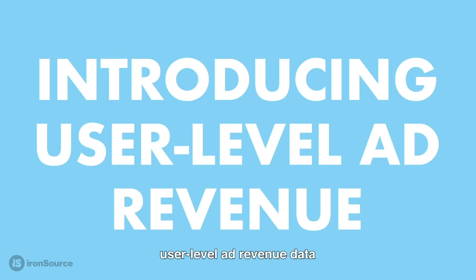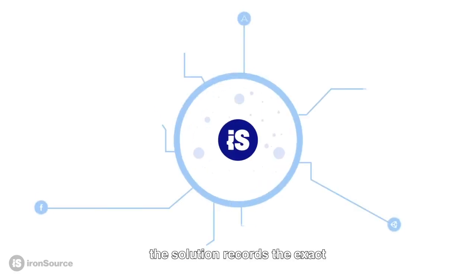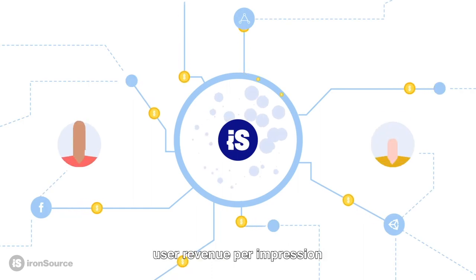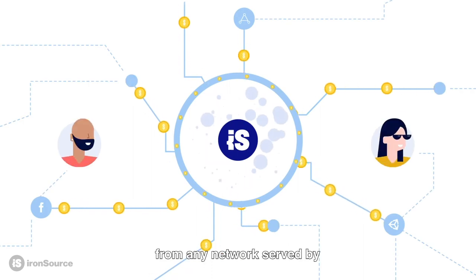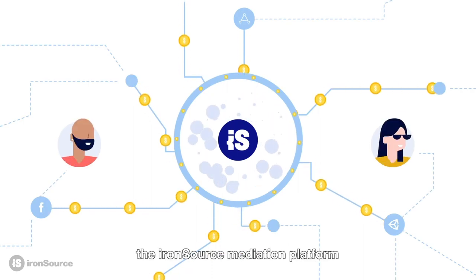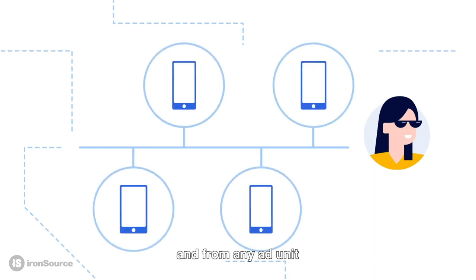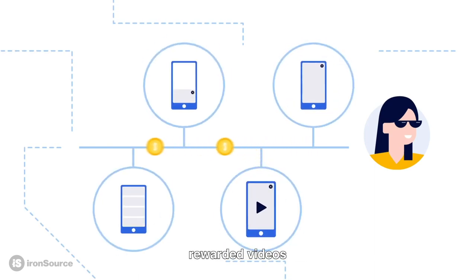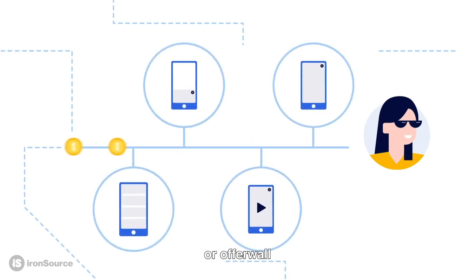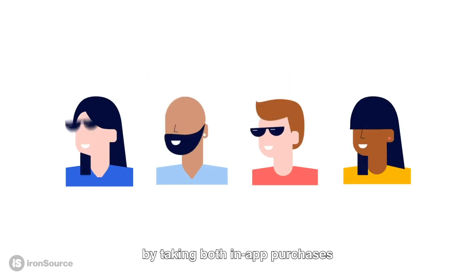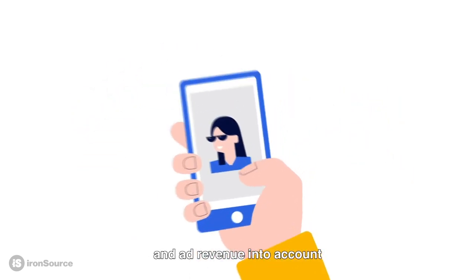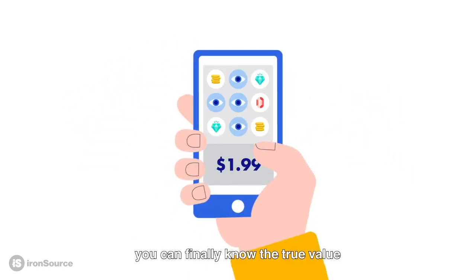That's why here at IronSource we solved this problem. User-level ad revenue data is now available on our mediation platform. The solution records the exact user revenue per impression from any network served by the IronSource mediation platform and from any ad unit — whether it's interstitials, rewarded videos, banners, or offer wall.